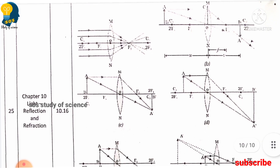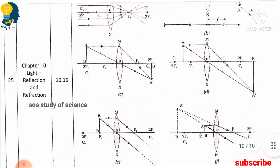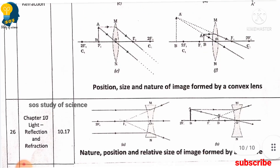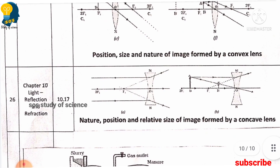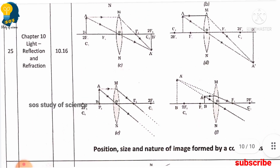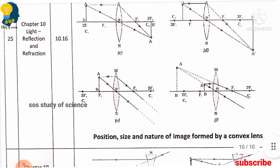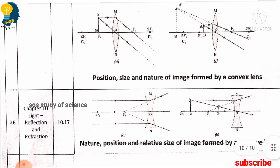In further sessions I will teach you how to draw these diagrams. Moving to the next, you must learn the nature, position, and relative size of image formed by a concave lens. These diagrams are usually asked in the examination for two to three marks and are very very important.